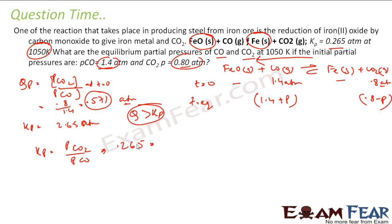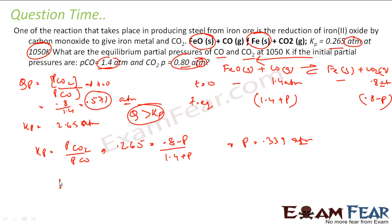Kp is 0.265, and the pressure of CO₂ is 0.8 minus P, while the pressure of CO is 1.4 plus P. Solving this equation gives P = 0.339 atm. Therefore, the partial pressure of CO at equilibrium is 1.4 plus 0.339 atm.